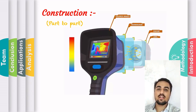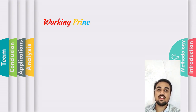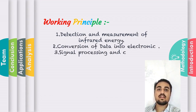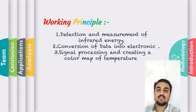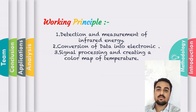Next is the working principle. We know that all bodies emit infrared radiation and infrared energy. An infrared camera uses infrared energy devices to capture infrared radiation. It detects the infrared radiation using a thermal sensor chip and measures the infrared energy. This measured data is then converted into an electronic image which displays the temperature of the body being measured.